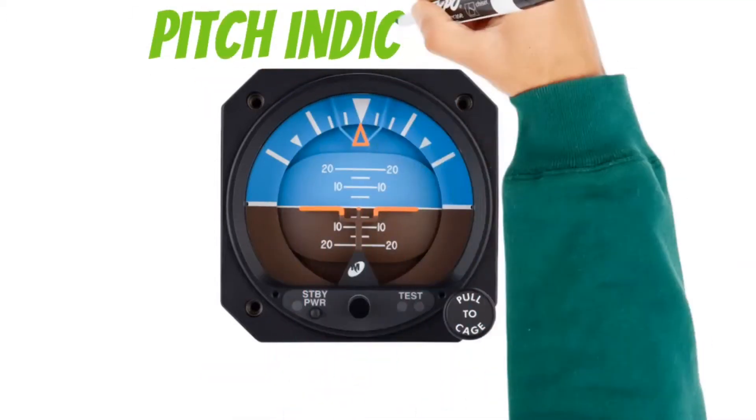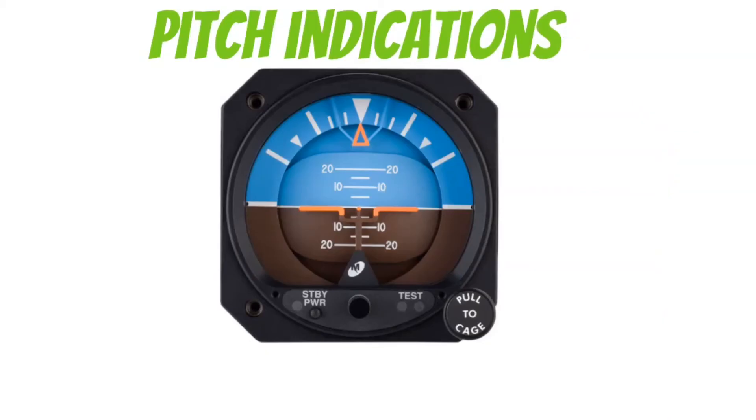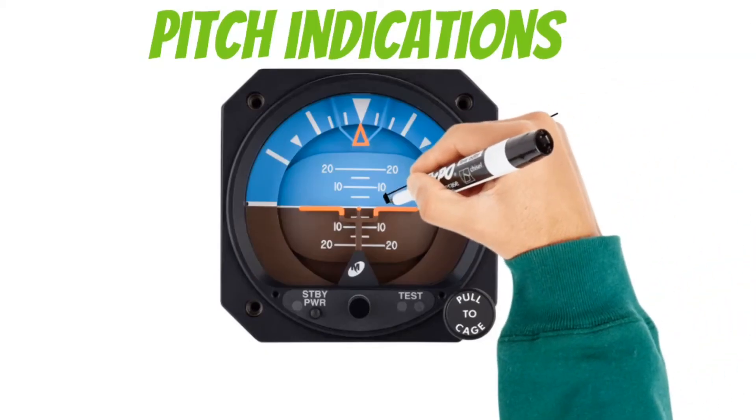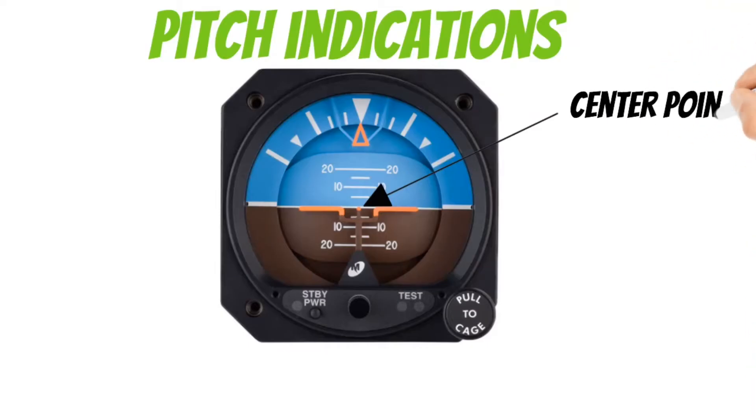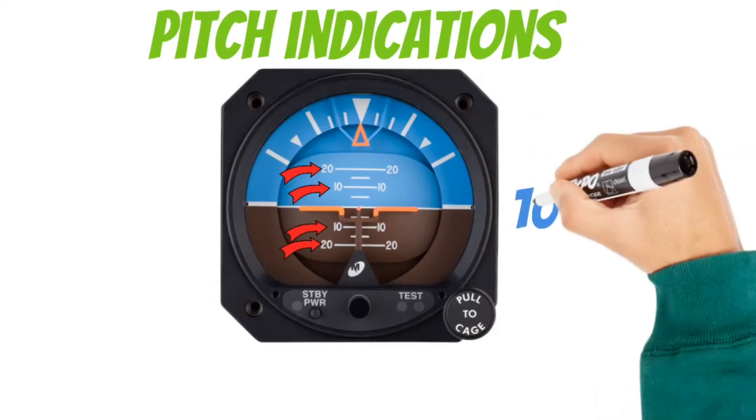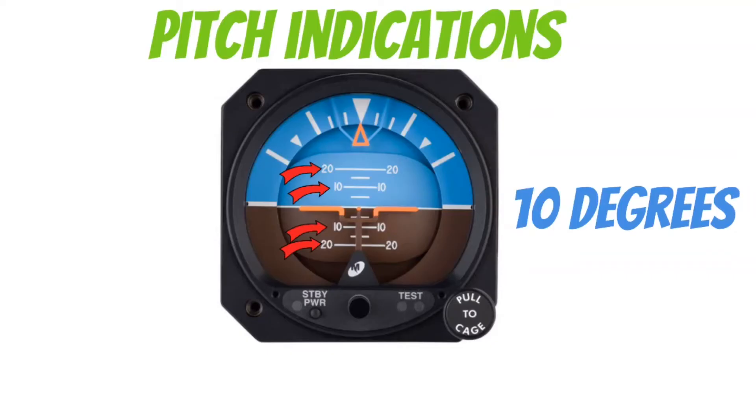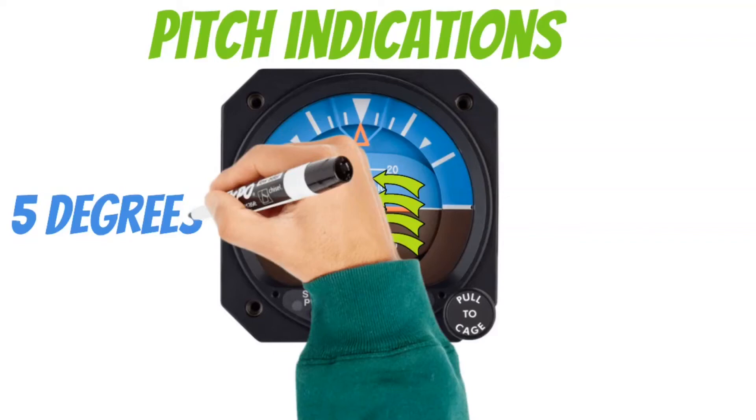Now, let's take a quick look at how the attitude indicator indicates pitch. To determine the aircraft's pitch angle in relation to the horizon, we'll want to take a look right here at this little center point on the miniature aircraft. I call this the Pipper. Now, as you can see here, the Pipper is right on the horizon right now. That lets me know that our pitch angle is at 0 degrees. Then, as you can see here, these larger graduations are showing you every 10 degrees of pitch up or down. Then, these smaller graduations are showing you every 5 degrees of pitch.